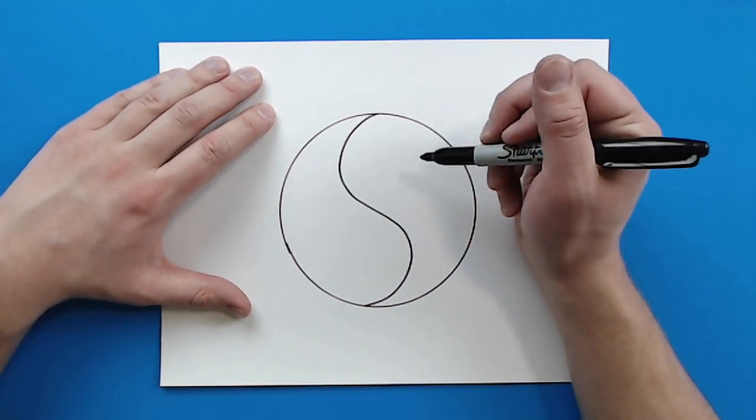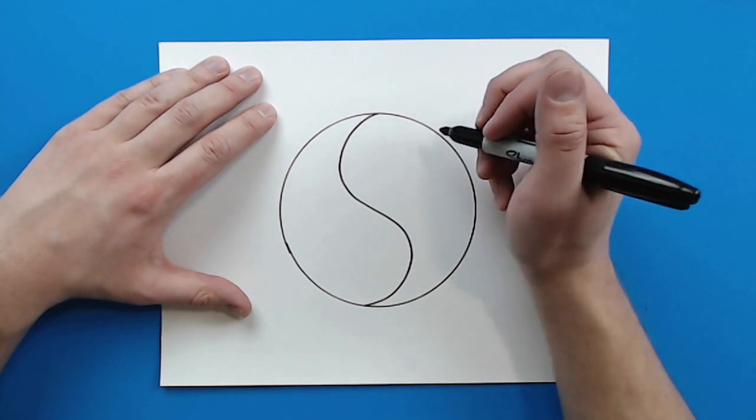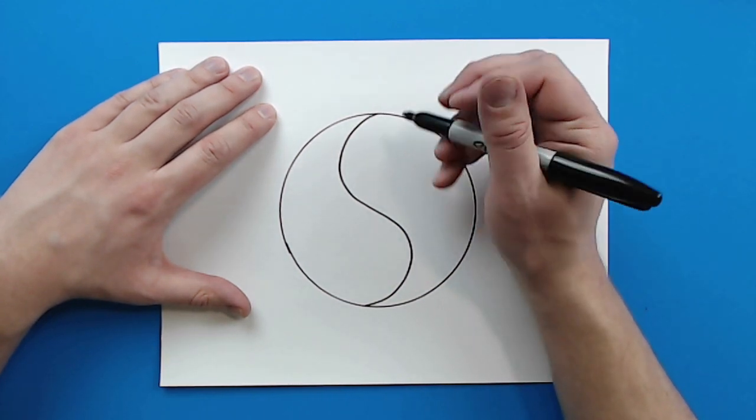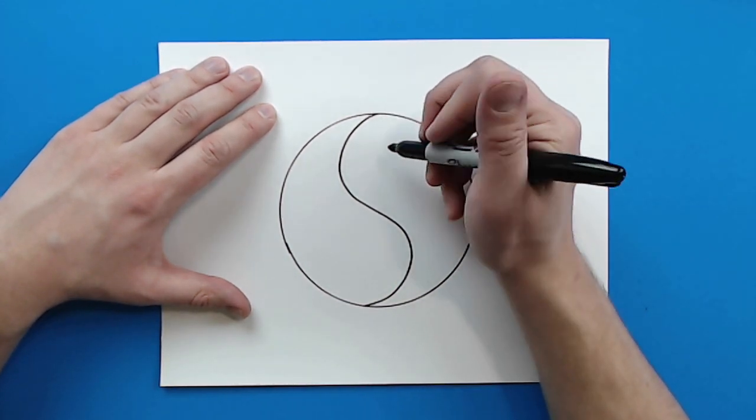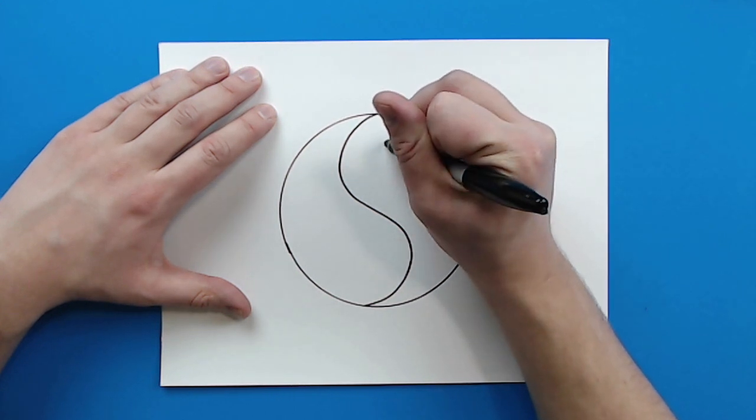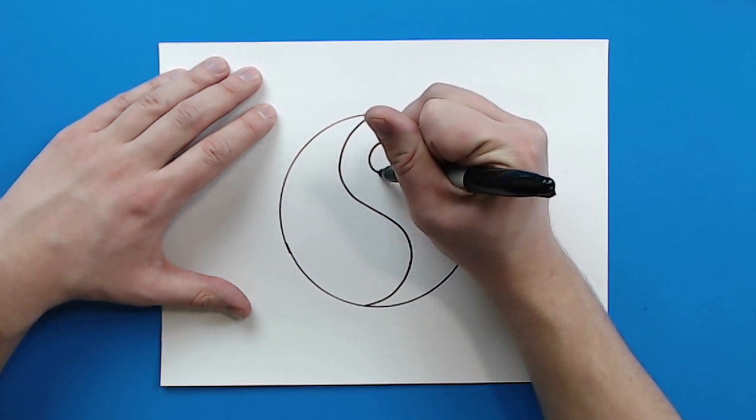Now, the next part of your yin and yang is you want to make the circles. So you could always trace something or you can just draw them freehand. So you want to kind of line them up. And the first circle is going to be right in here.